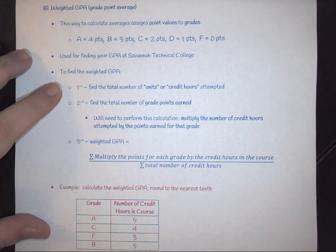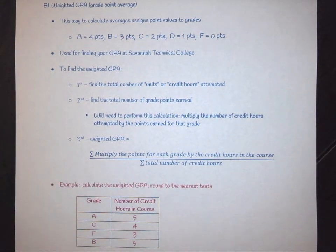In order to find your weighted GPA, you simply need to follow this idea. First, you need to calculate the number of credit hours that were attempted. After you do that, you need to find the number of grade points that were earned.